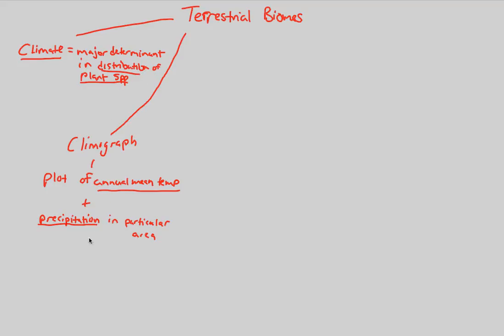Why does the climograph give us information about plant distribution? Because precipitation and temperature are two critical characteristics determining the types of plants, how many plants there are, and where plants will be growing — since plants rely on both temperature and water. Thus, we need a climograph to give us a good understanding of the possible distribution of plant species in respect to the climate of our terrestrial biome.